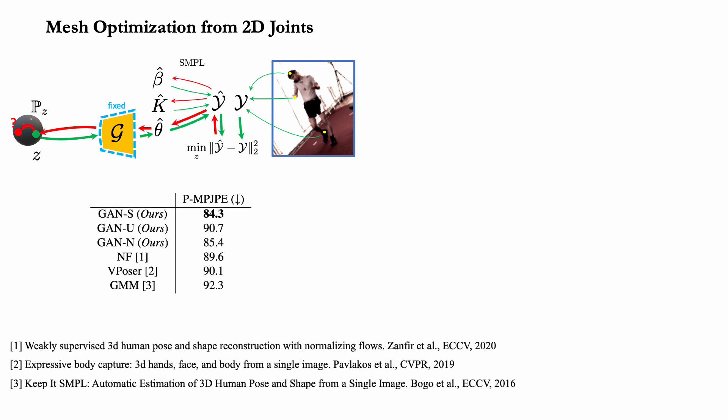To illustrate how universal our prior is, we provide two more sets of experiments. The first is body optimization given 2D image keypoints. We optimize an SMPL pose with reference to its latent representation. This yields state-of-the-art results on Human36M dataset.